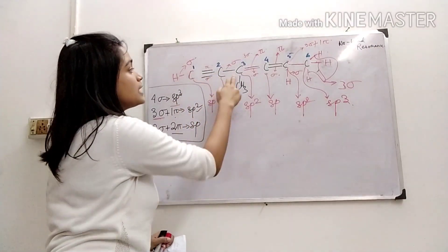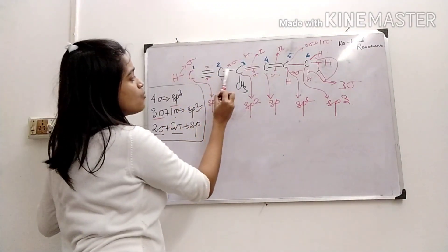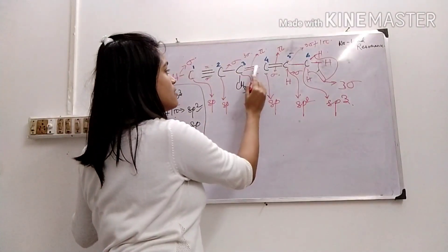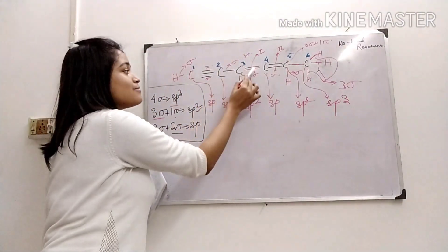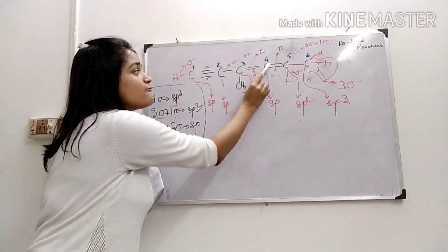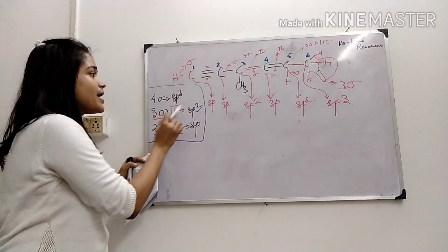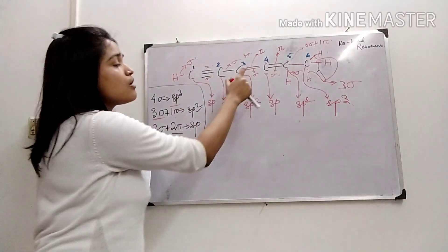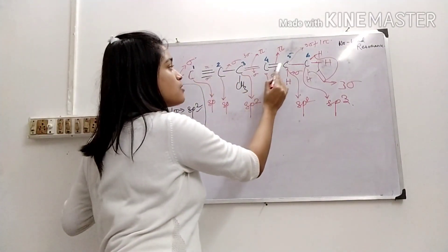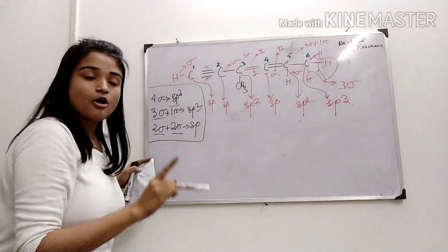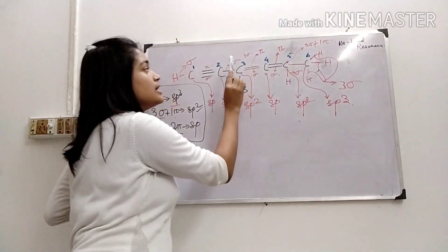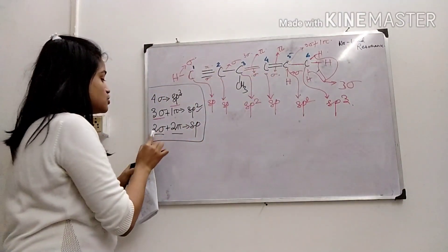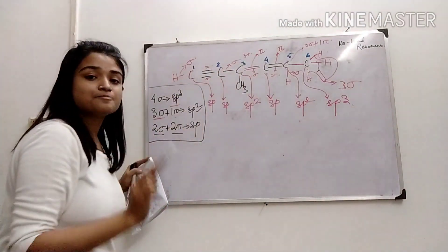The third carbon forms one sigma with the second carbon, one sigma with the methyl carbon, and one sigma with the fourth carbon — three sigma and one pi — so it is sp2. The fourth carbon forms one sigma with the third and one sigma with the fifth, plus one pi with each — two sigma and two pi — so it is sp hybridized.